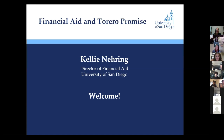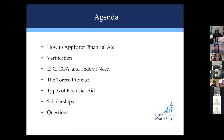I actually did some research on your school today — you have a beautiful campus. I've never been there in person, but it looks gorgeous. So tonight we're going to talk about how to apply for financial aid, discuss the federal verification process, explain what EFC, COA, and federal need are — all of that will make complete sense in about 20 minutes. We're going to talk about the Torero Promise, the types of financial aid available at USD, how to apply for outside scholarships, and of course time for questions.